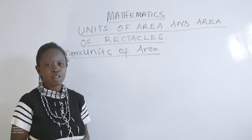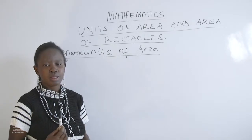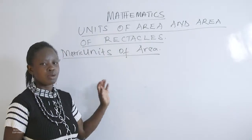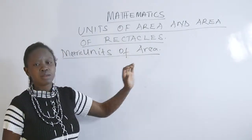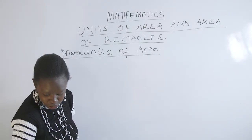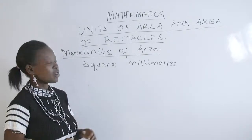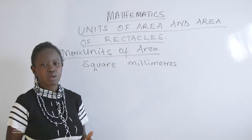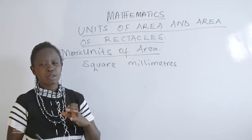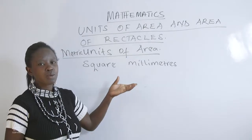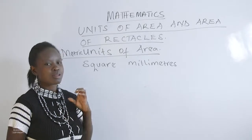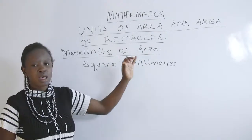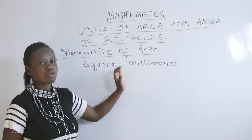You remember when you looked at units of measurement, we had the Egyptian, the metric, the Roman, and so on. We want to deal with the metric units of area. The first thing we need to understand is that area is given in square units. As we look at the metric units, we have millimeters, centimeters, meters, and kilometers. So the first unit we have is square millimeters.